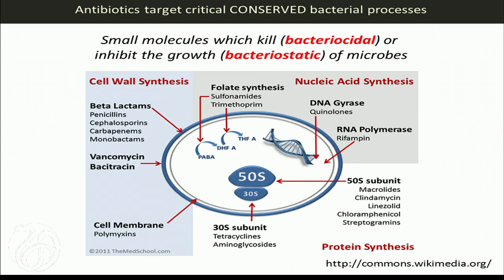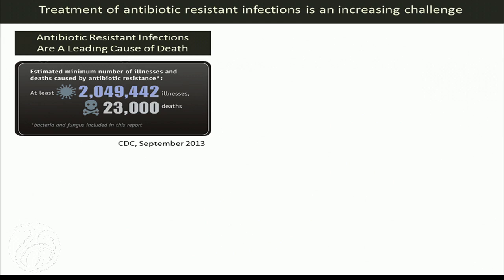This extends to other bacterial processes as well: transcription, translation, and metabolism. Because these are processes conserved across the bacterial kingdom, antibiotics can have collateral damage. When we ingest an antibiotic to treat an infection, we hit essentially all of the other bacteria that antibiotic comes into contact with, which has led us toward what is now termed a post-antibiotic era.